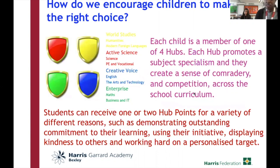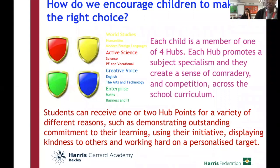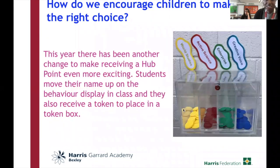We encourage children to make the right choice. We have four hubs: World Science, Active Science, Creative Voice and Enterprise. Each child is a member of one of the four hubs, and each hub promotes a subject specialism and creates a sense of camaraderie and competition across the school curriculum. Students can receive one or two hub points for demonstrating outstanding commitment to their learning, using their initiative, displaying kindness to others, and working hard on a personalised target. They also have tokens which are placed in a container so we can keep track of the points they've been given.